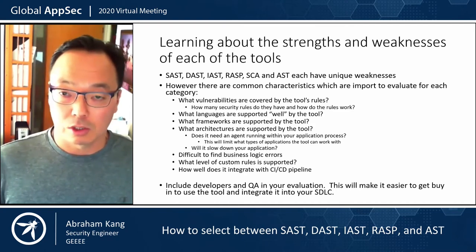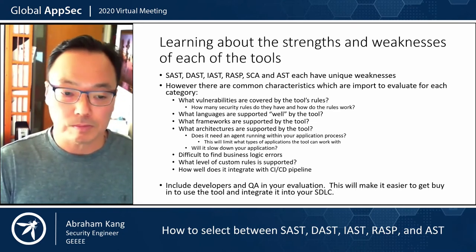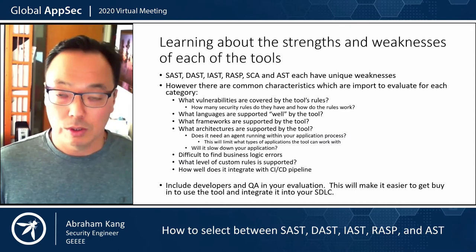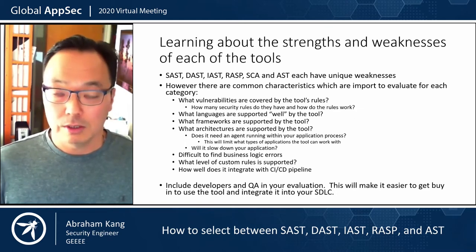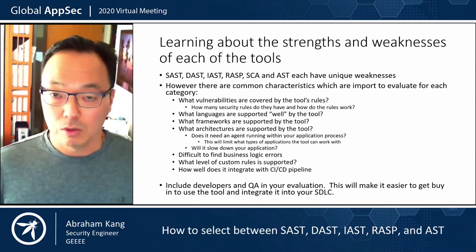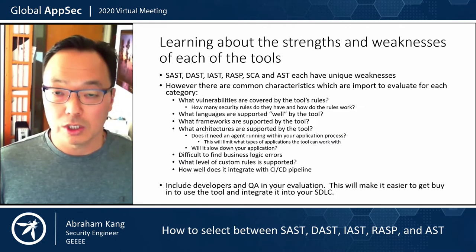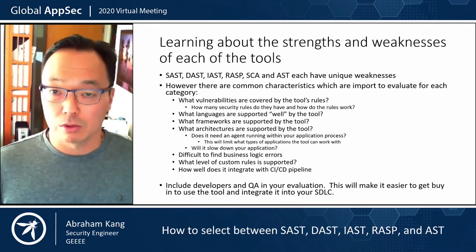How well a tool supports a framework is a question of how many rules they have and how well they support the underlying language that the framework is built on. You also have to understand what architecture is required by the tool. For example, with IAST and RASP, you need to have an agent running in your application, which is going to be very difficult to do in a trusted environment or a mobile application. All of these tools are going to struggle with finding business logic vulnerabilities, so you may want to write your own custom rules. If you're going to do that, you need to know what level of custom rules the tools support.